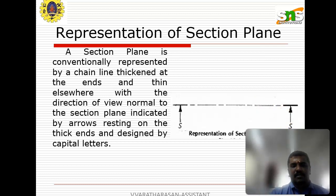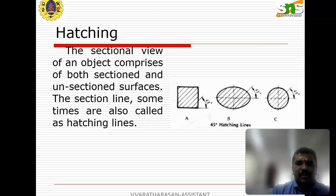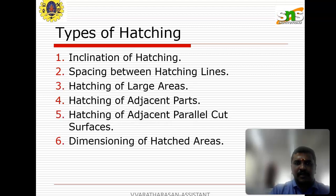That is the way of representation of the sectional plane or cutting plane. The hatching portion will be shown in the figure. The sectional view of the object comprises both sectioned and unsectioned surfaces. The section lines are sometimes also called hatching lines. Types of hatching include: inclination of hatching, spacing between hatching lines, hatching of large areas, hatching of adjacent parts, and hatching of adjacent parallel cut surfaces.